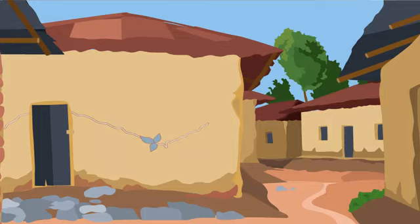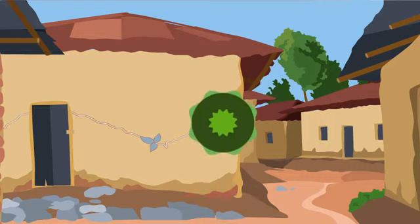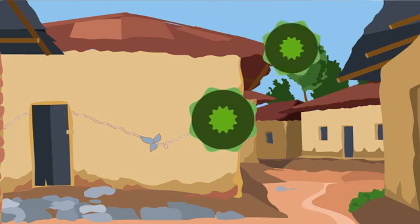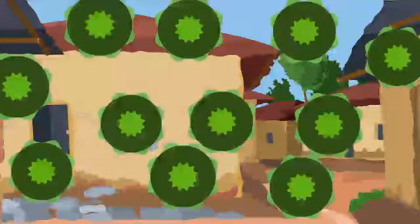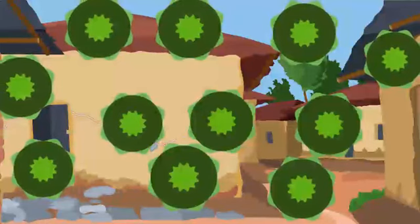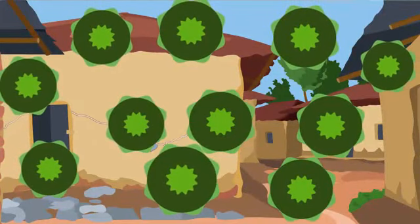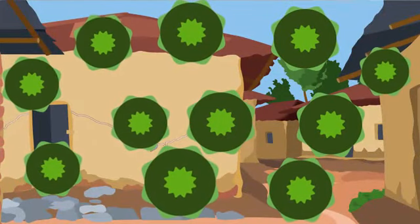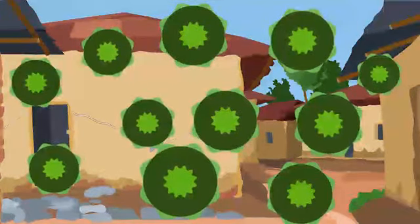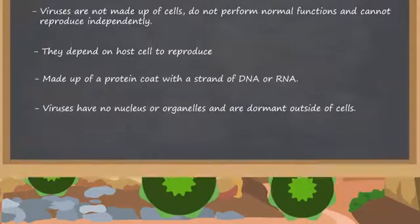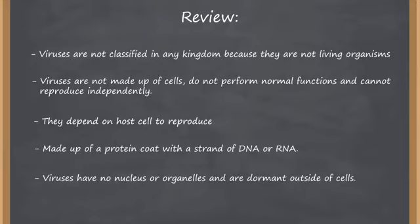But those are just the good ones. Bad viruses attack living cells and destroy them. They can multiply quickly and spread easily through the air or by contact, and can cause diseases like AIDS, chickenpox, cancer, and herpes. Even though they are not part of any kingdom, they have a big impact on living organisms.